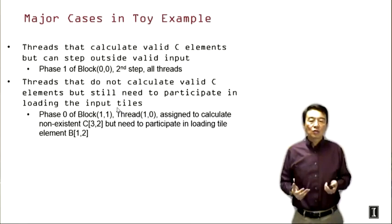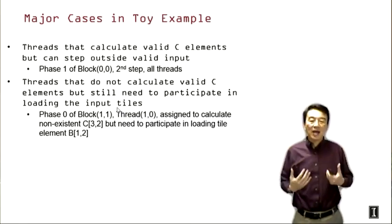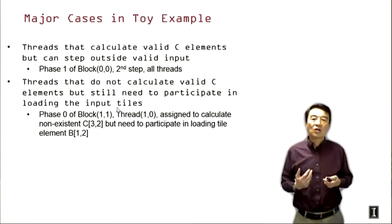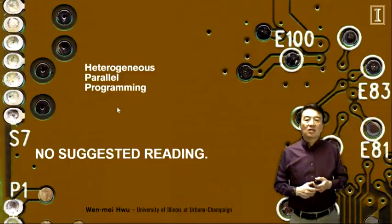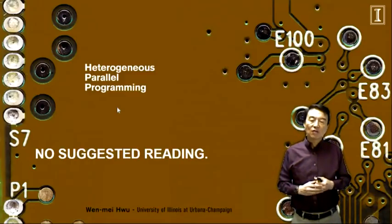So with these two constraints, we're going to go over a kernel design that systematically handles all these cases and gives us correct execution results regardless of the dimensions of M, N, and K. We don't have any suggested reading for this particular lecture, so I will see you in the next lecture. Thank you.